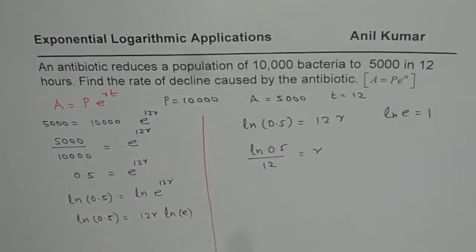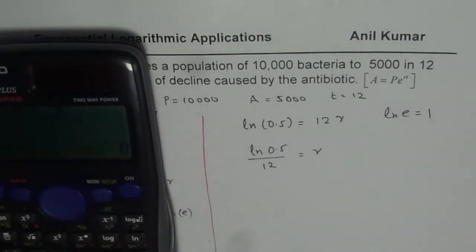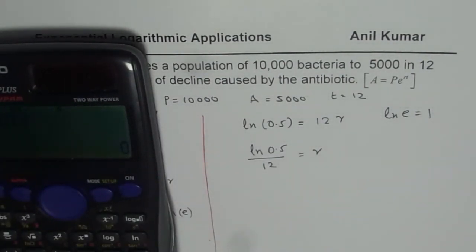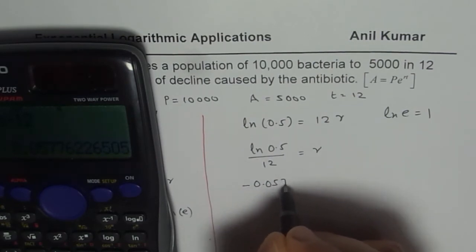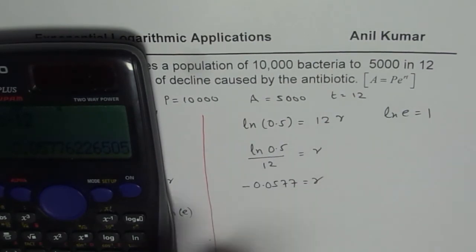We get ln 0.5 divided by 12 equals minus 0.0577. So as expected,